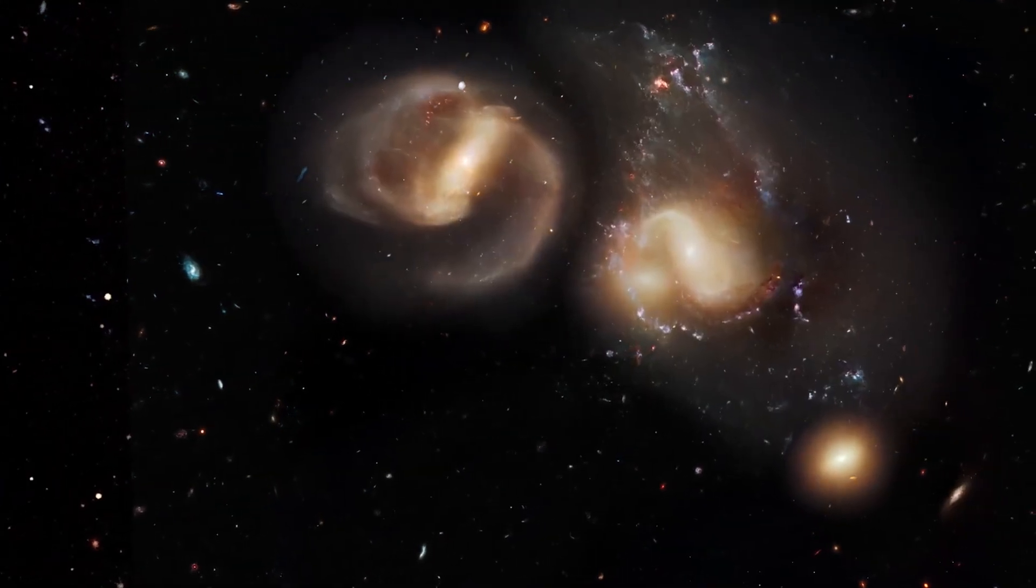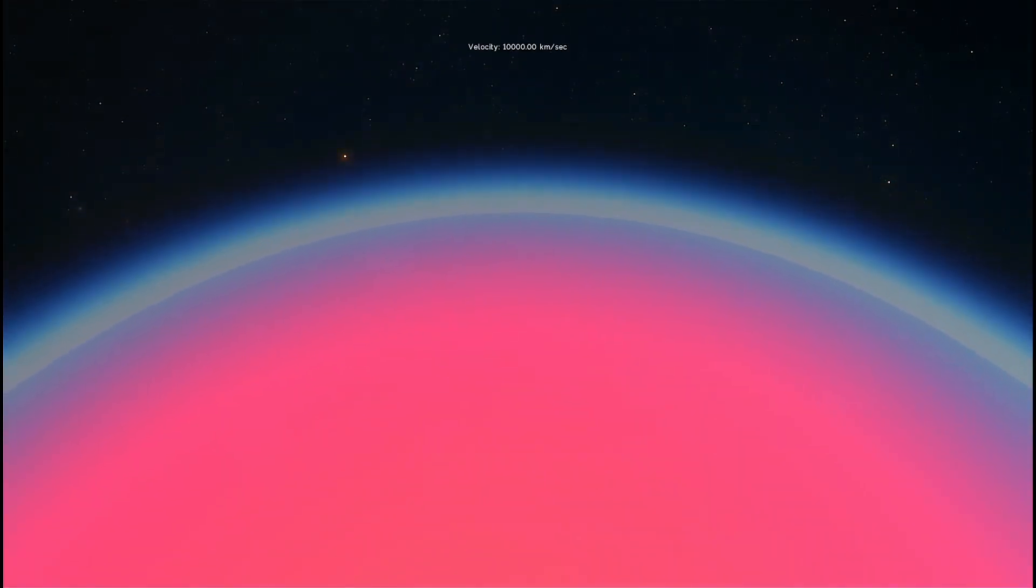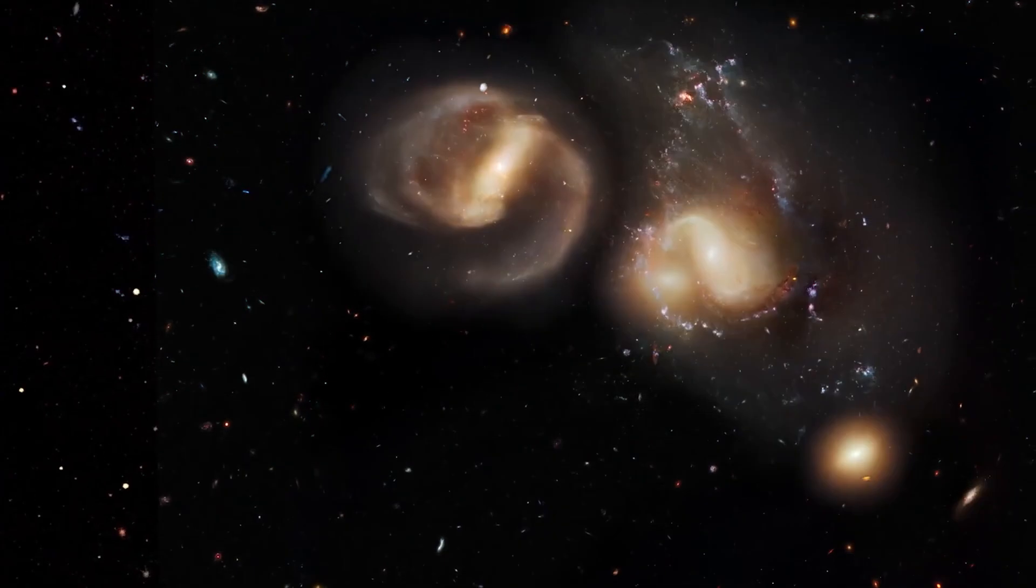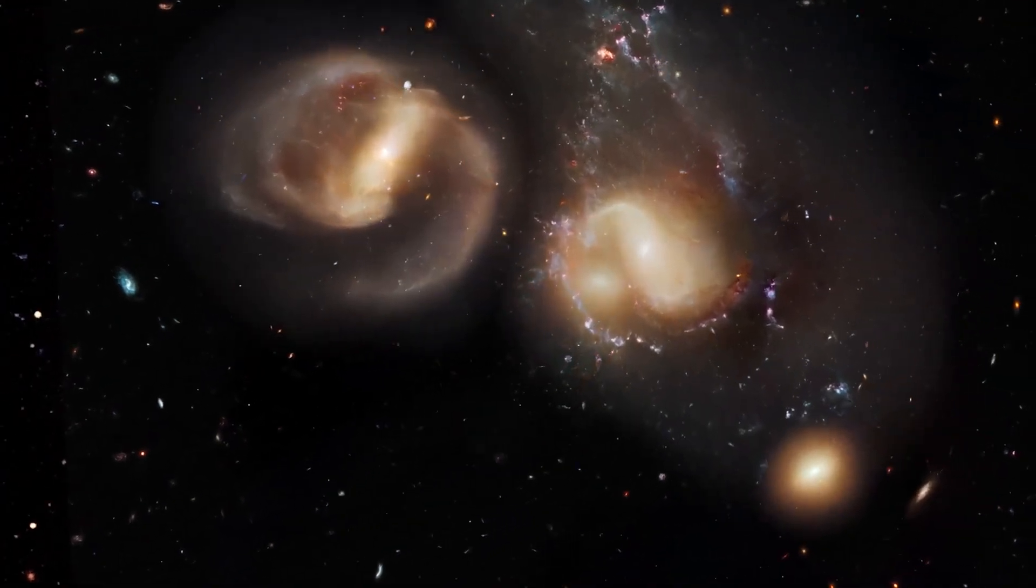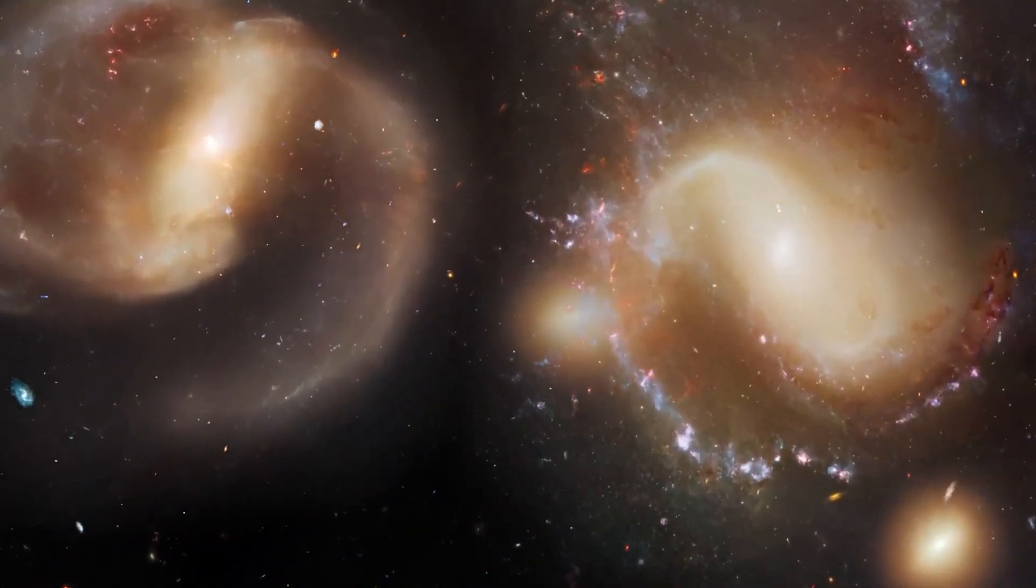Talking about the images revealed, they reflect five areas of space that researchers agreed to target: the exoplanet WASP-96b, the Southern Ring Nebula, the Carina Nebula, Stephan's Quintet (five galaxies in the constellation Pegasus), and the galaxy cluster SMACS-0723.